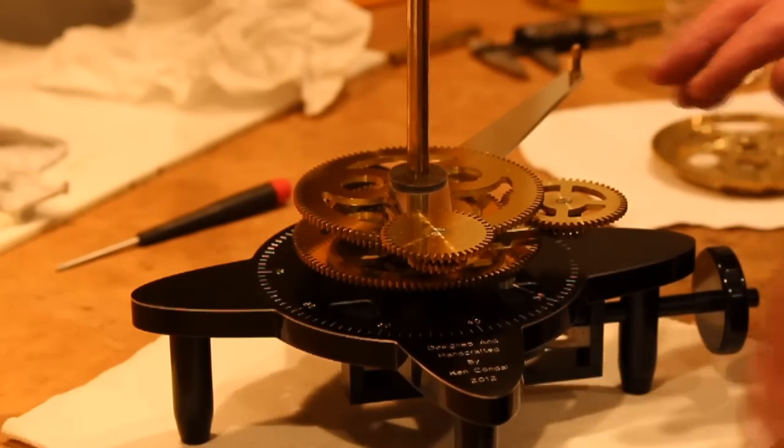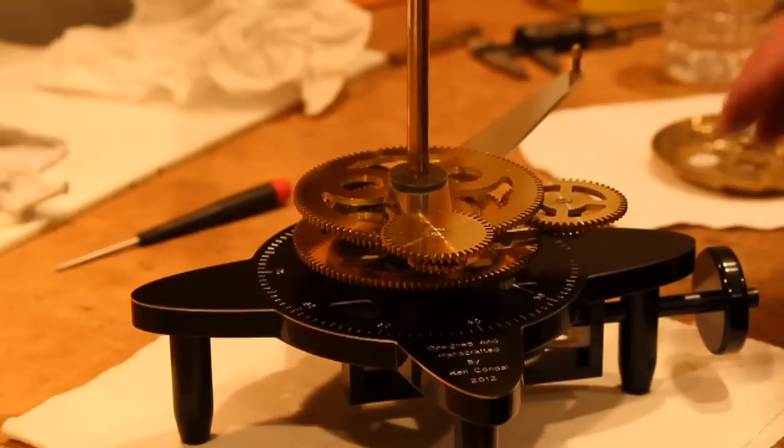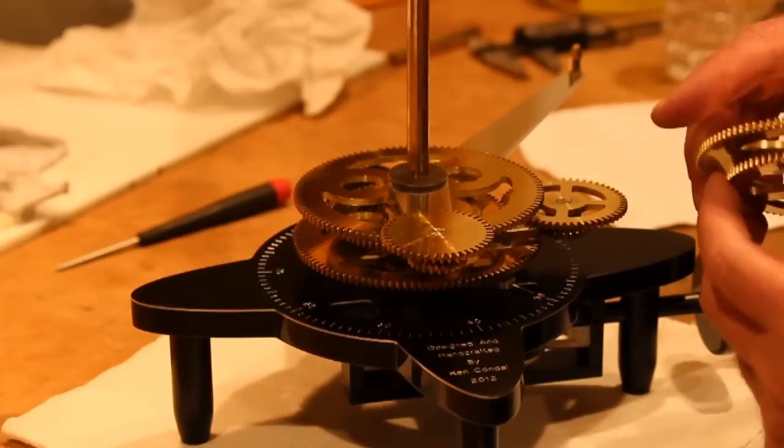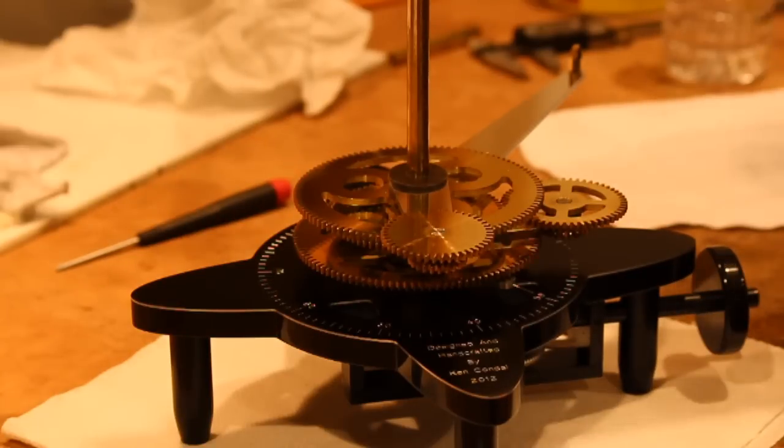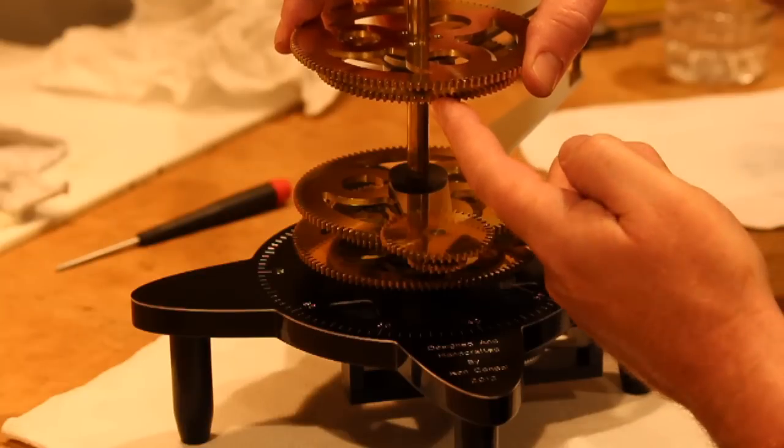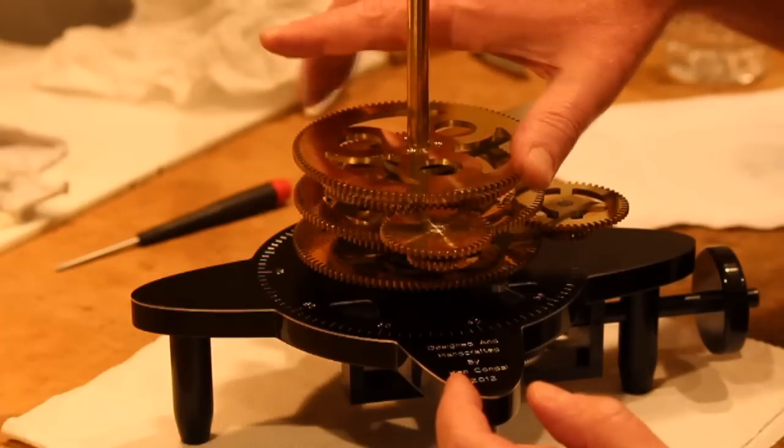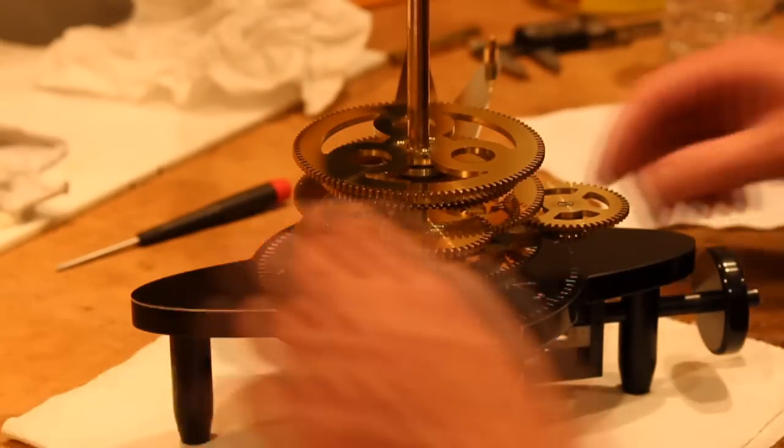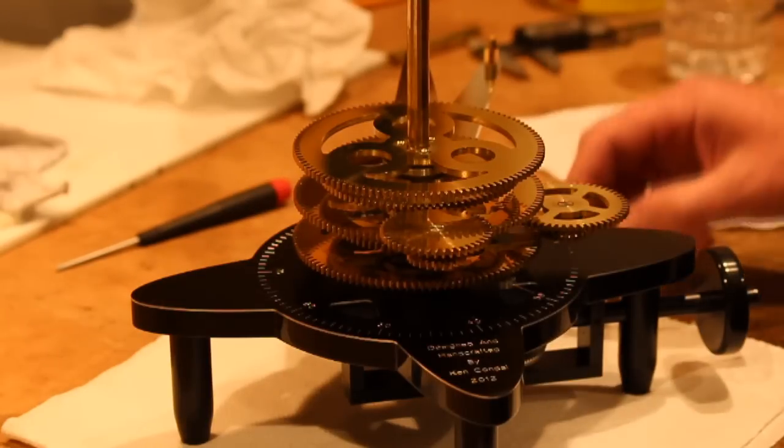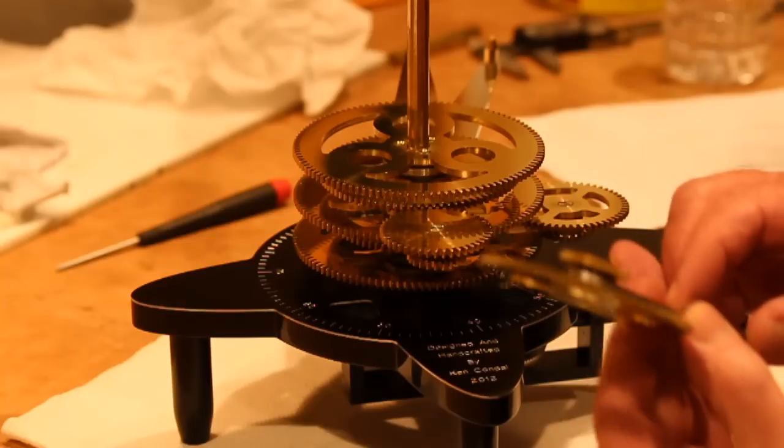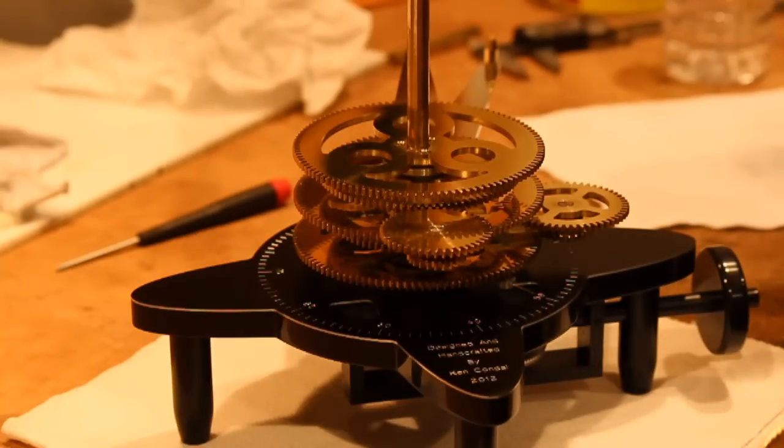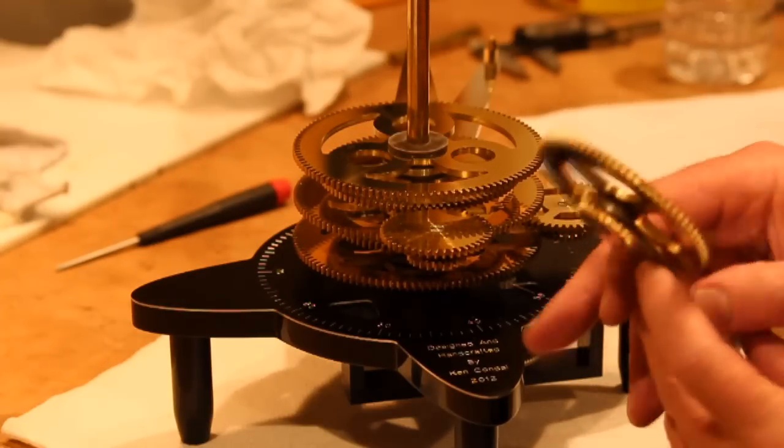Now that the sub-assemblies for the Jupiter planet have been completed, it's simply a matter of placing them on the stack. Note that this gear is now going to match with the lower one here. And then another spacer goes on.